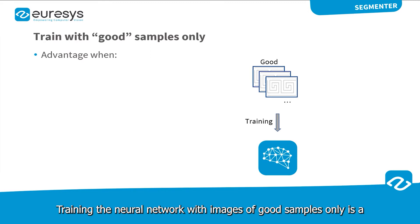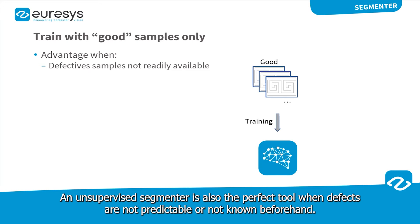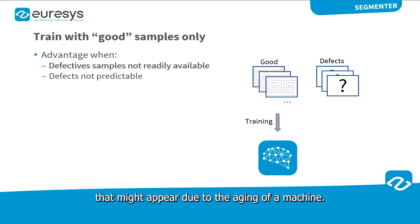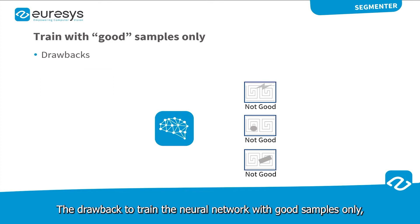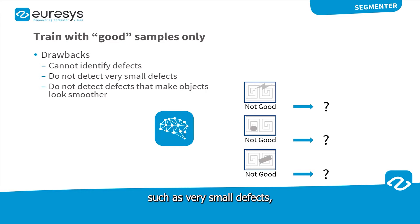Training the neural network with images of good samples only is a great advantage for applications where defective samples are not readily available. An Unsupervised Segmenter is also the perfect tool when defects are not predictable or not known beforehand, for instance, in case of new types of defects that might appear due to the aging of a machine. The drawback to train the neural network with good samples only is that it cannot identify the type of defect. The Unsupervised Segmenter might also not be able to detect all the defects that other tools may detect, such as very small defects or defects that make objects look smoother.